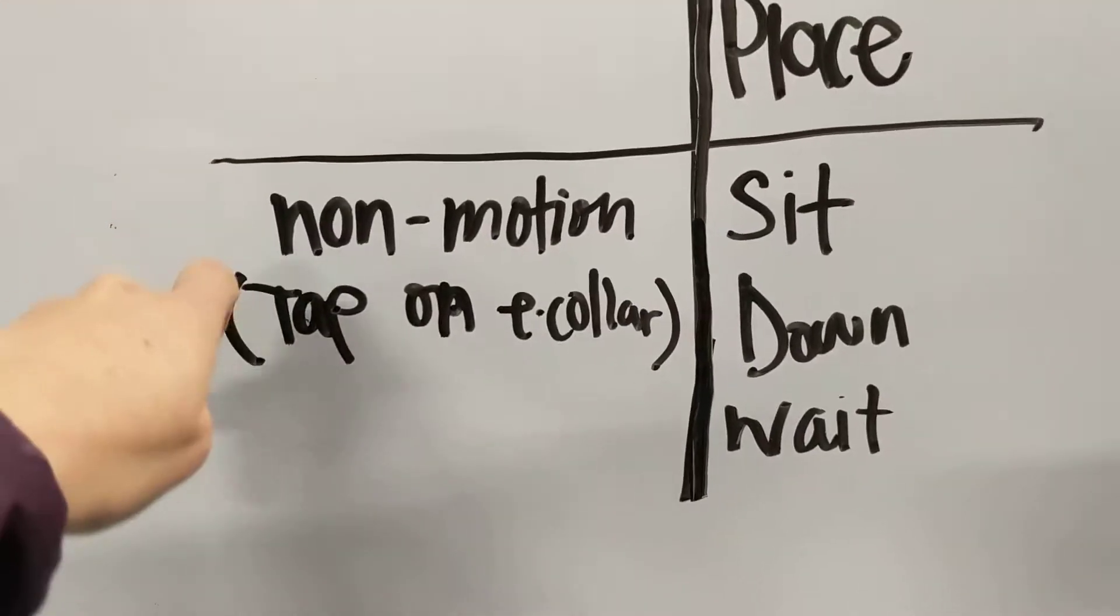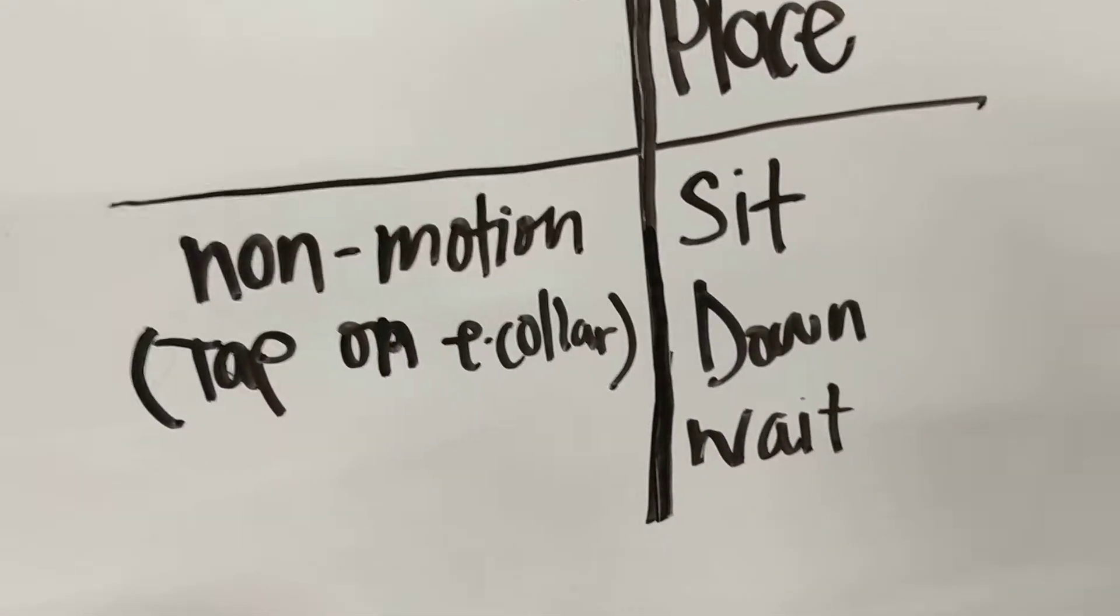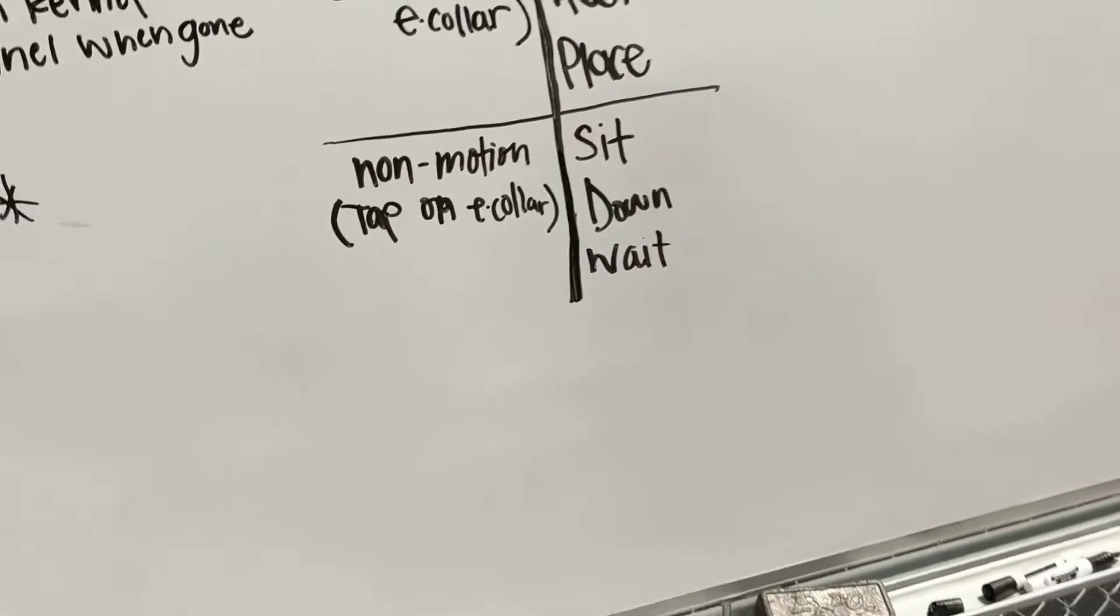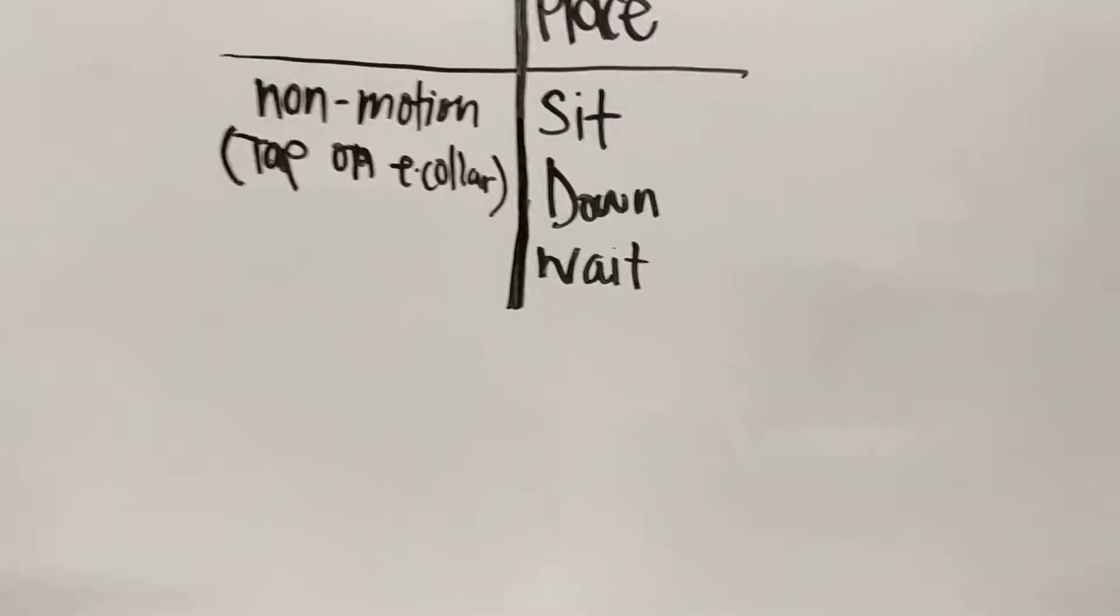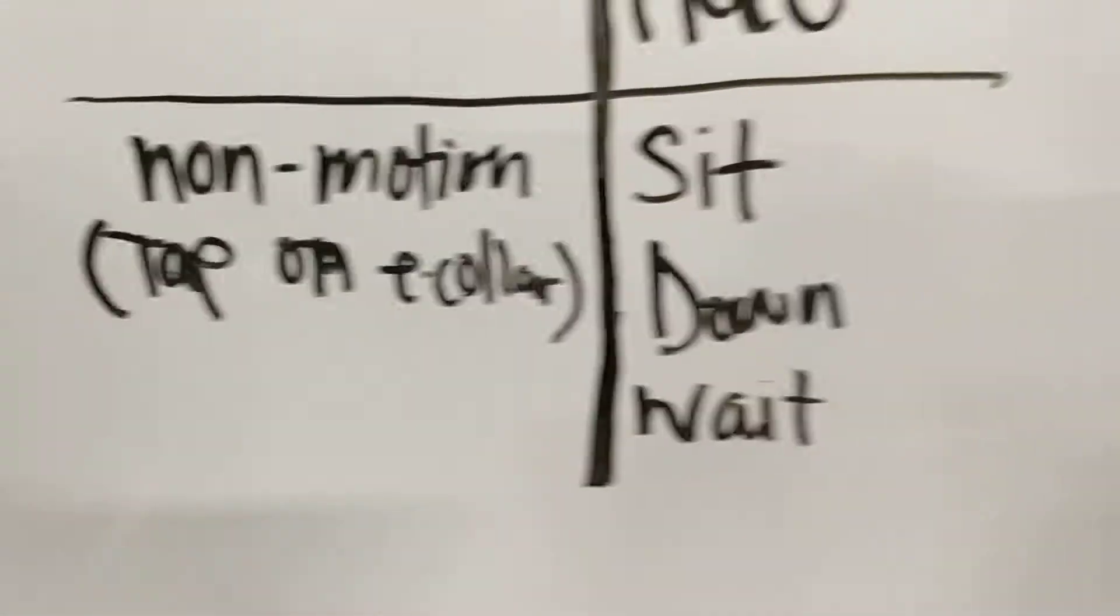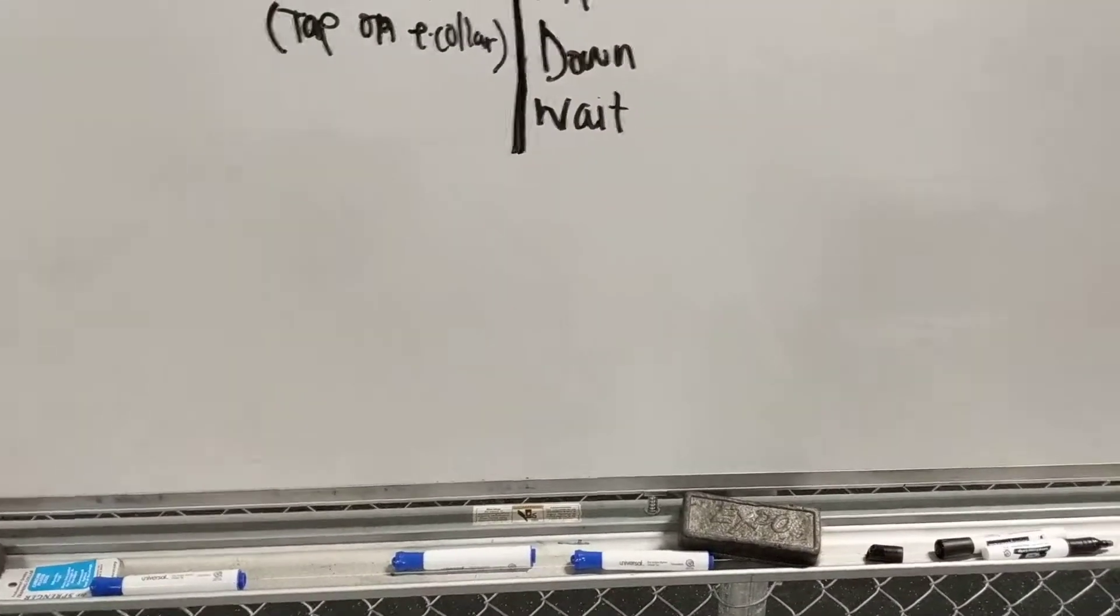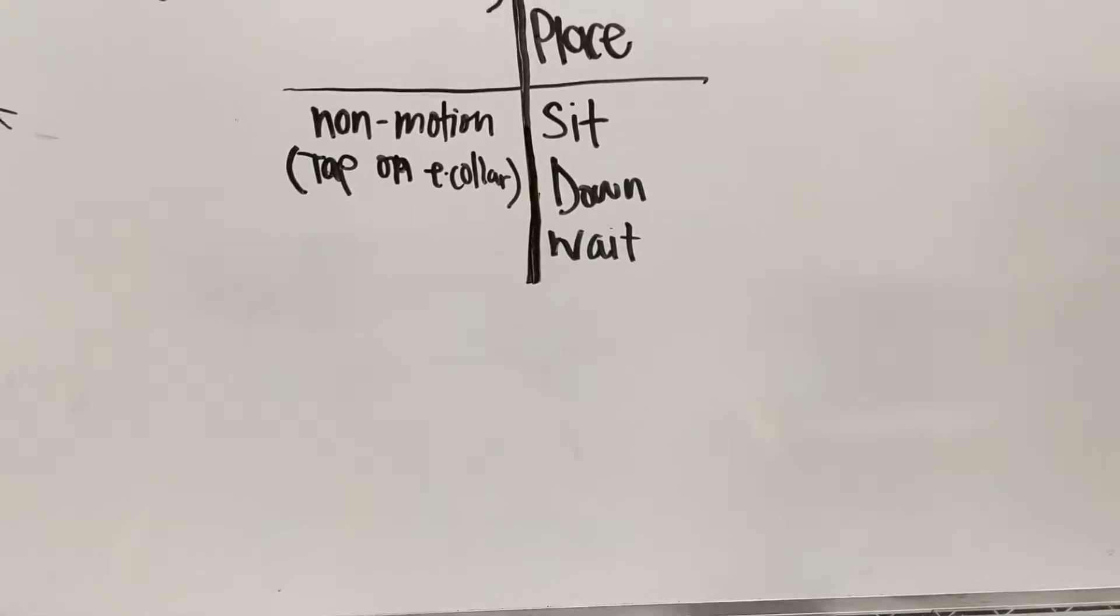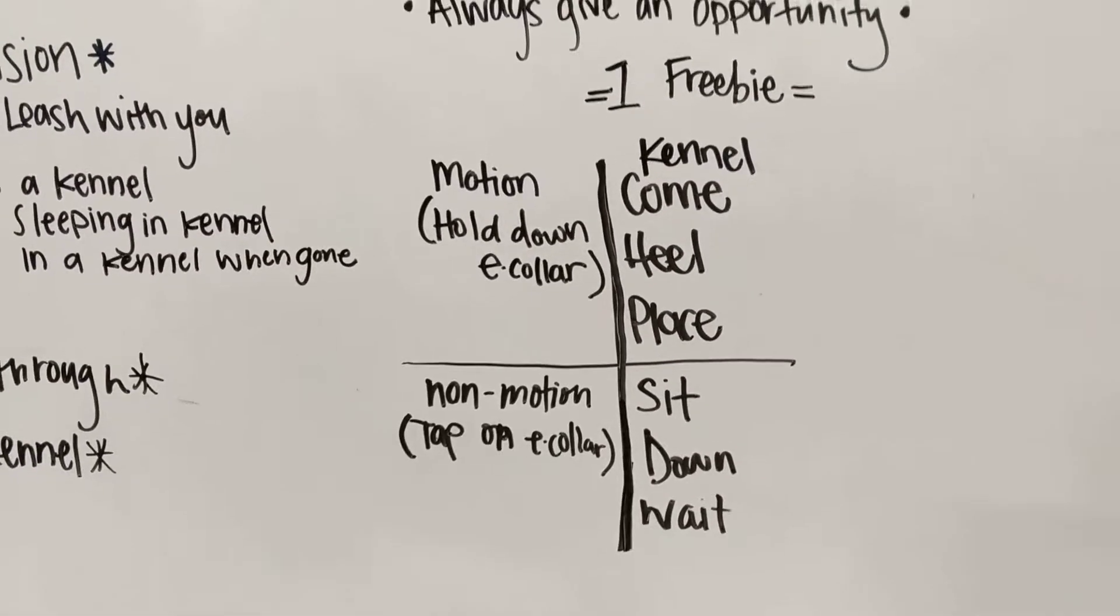So the second thing is a non-motion. So this will be a tap on the e-collar. So sit, down, and wait. He should not be moving. So sit, he just needs to put his butt down and be where he is. Down is I want him to lay down all the way. Wait, I will use for waiting to come out of the crate. He should not bust out of the crate before I ask. You know, when I say wait, waiting at doors, things like that. Those are really important for him.